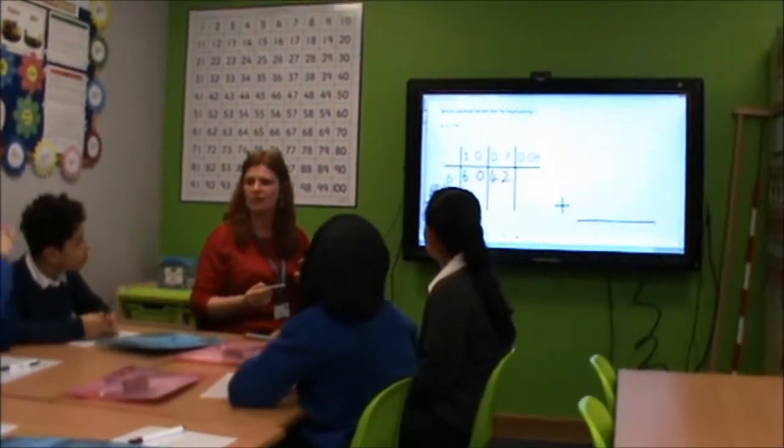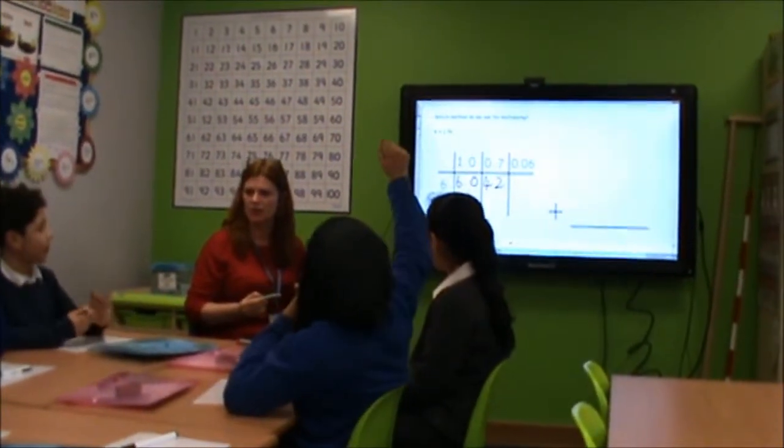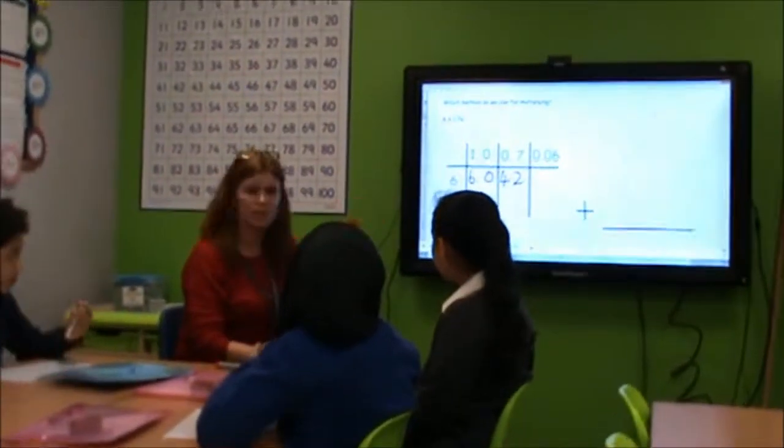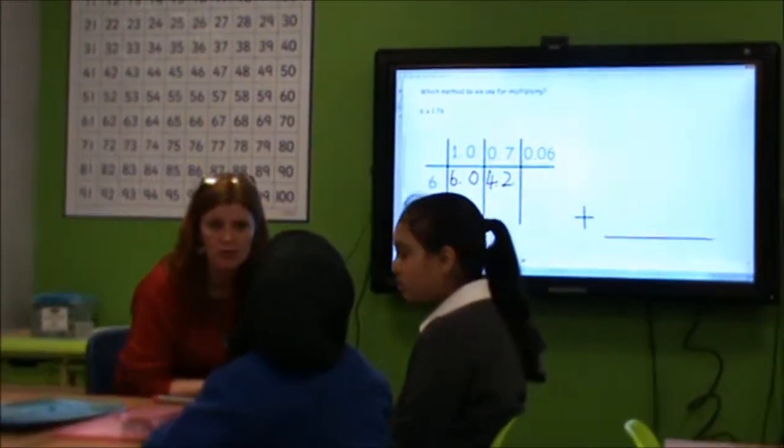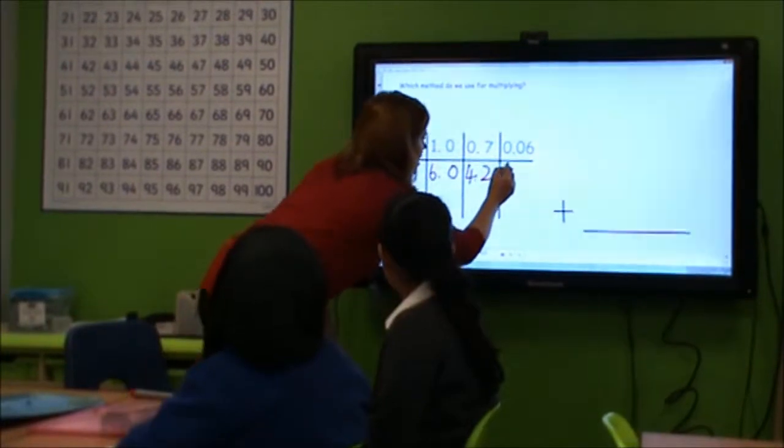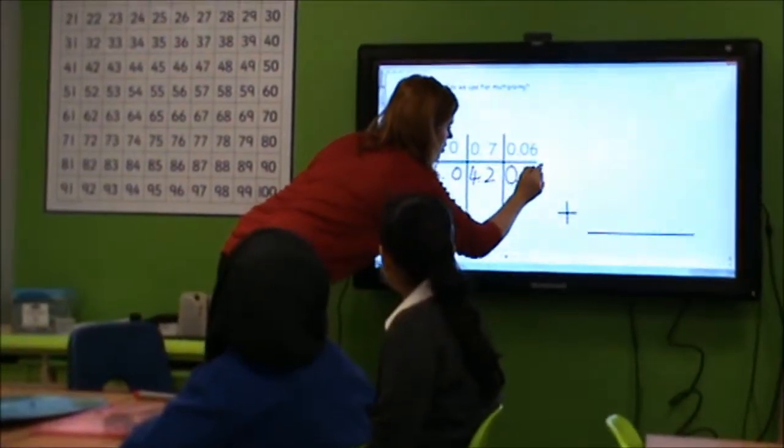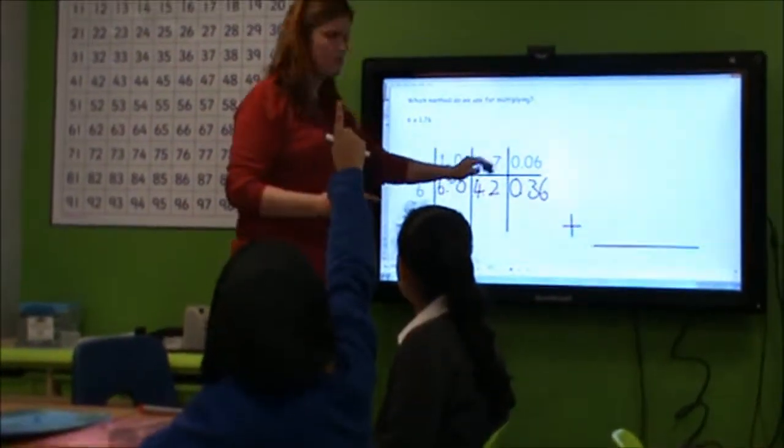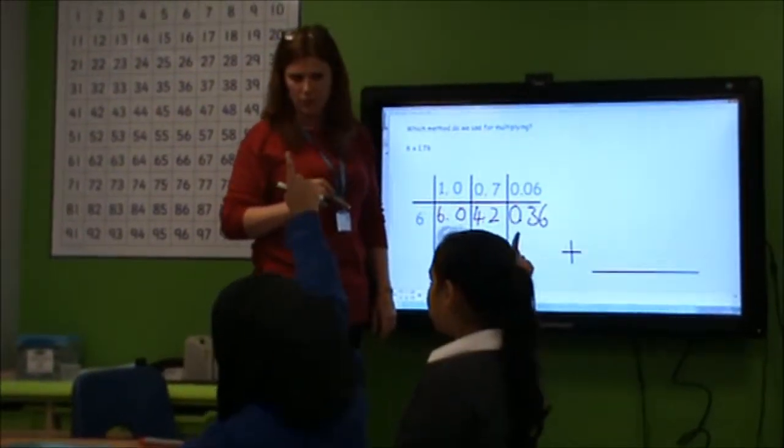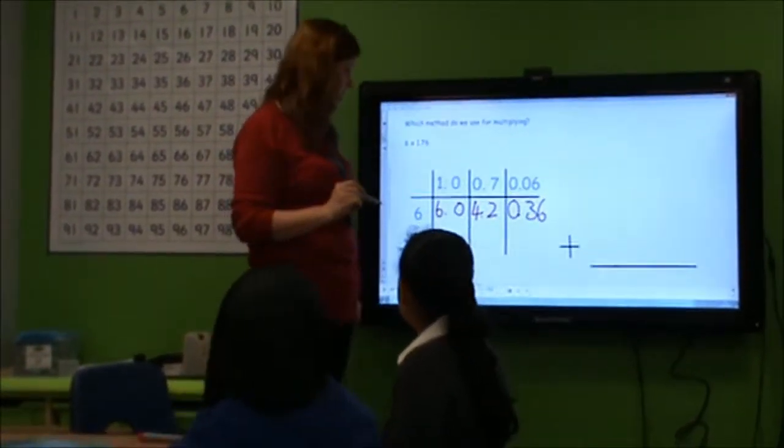6 times 6. Let's do that as 6 times 6. 36. Can you decimalise it for me? 0.36. 0.36. Fantastic. What's the next thing I do in this method? What's the next thing I do? Add them all together.